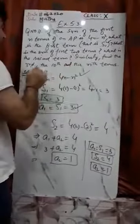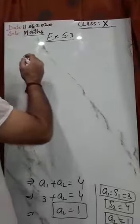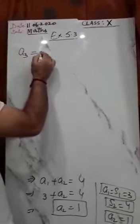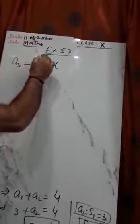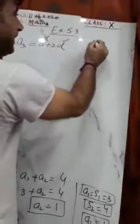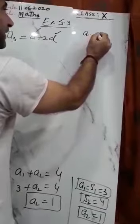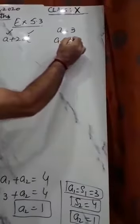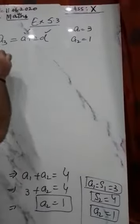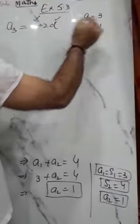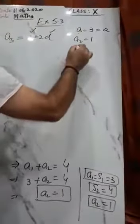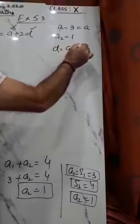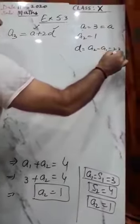Now we need to find the 3rd term. A3 = A + 2D. We need to find A and D. The first term A = 3, and the second term A2 = 1. D = second term - first term = 1 - 3 = -2. So the common difference D = -2.